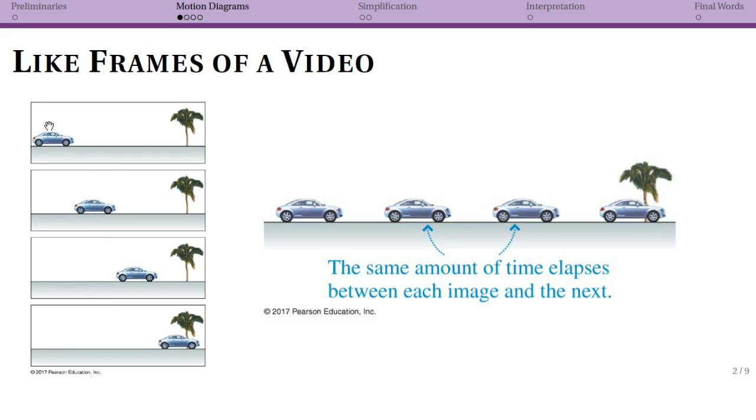So we assume that when you see something like this, just like a movie flipping by on the screen or perhaps an animated GIF online, that there was actually a smooth motion from this first position to the second position. That the car didn't just start here, magically teleport here, teleport there, and so on. That we're seeing a few points that are representative of smooth motion.